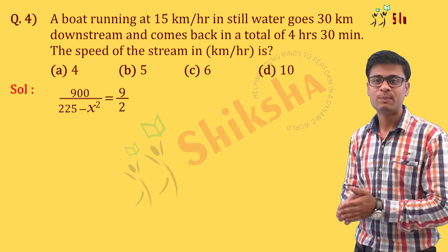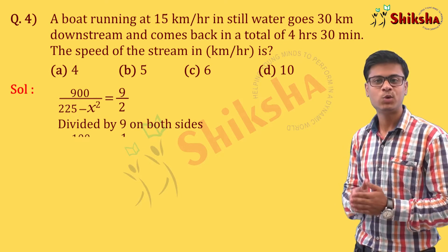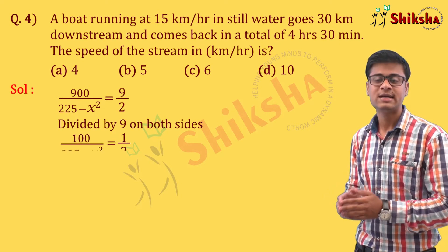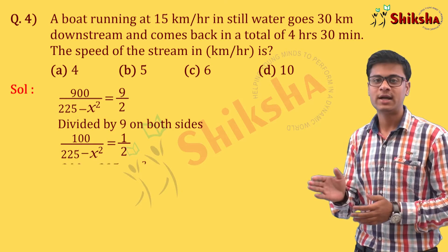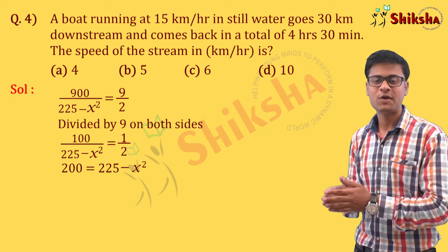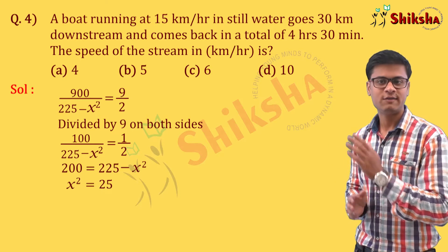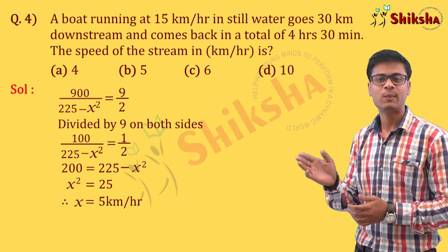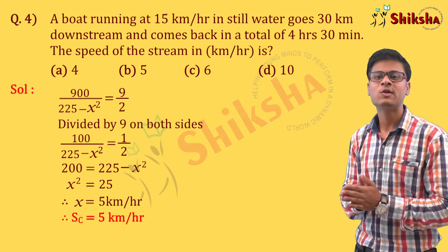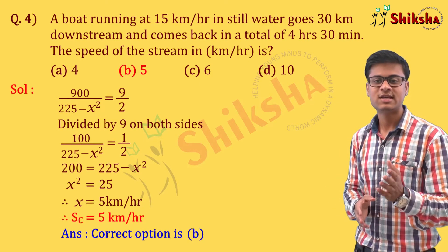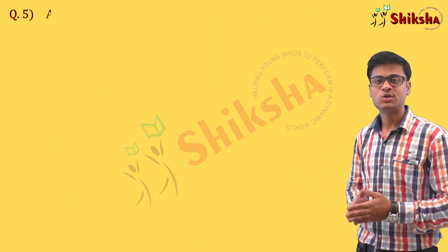Dividing both sides by 9, we get 100/(225 − x²) = 1/2. Cross multiplying gives 200 = 225 − x², so x² = 25, therefore x = 5 km per hour. The speed of the stream is 5 km per hour. Answer is Option B.